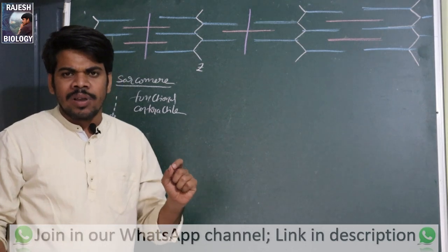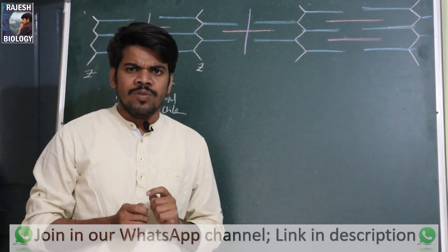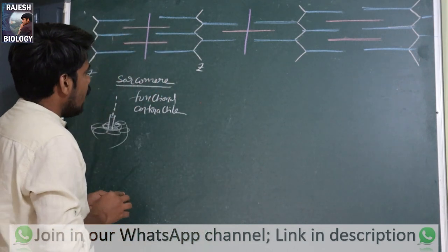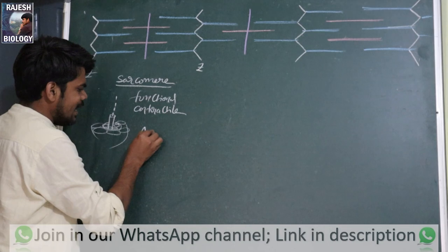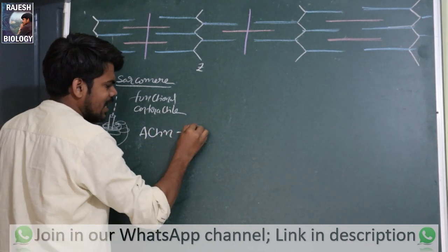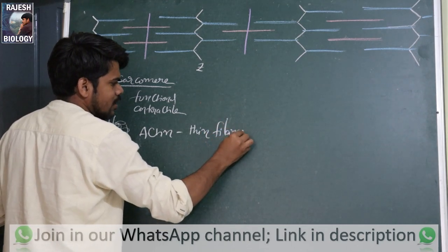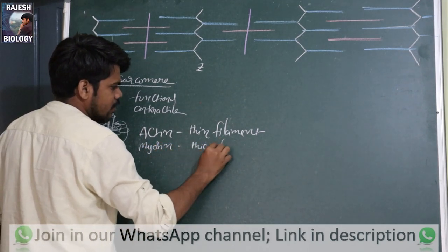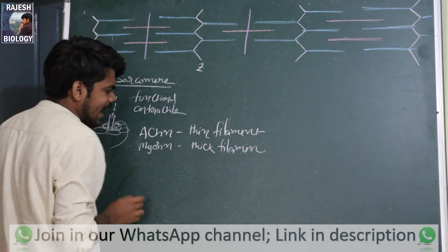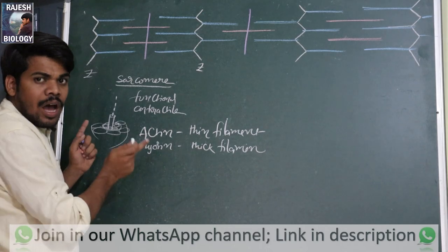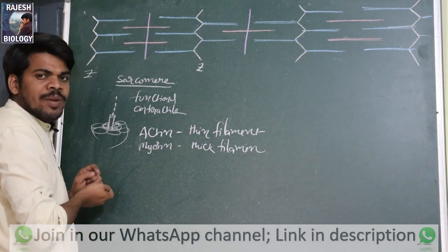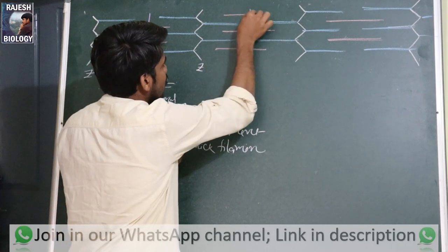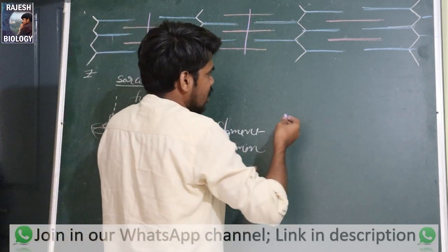Actin is a thin filament and myosin is a thick filament. Both actin and myosin are arranged in a parallel, alternate manner. That is why the muscle gives a striated appearance — because thin filament and thick filament are arranged alternately.